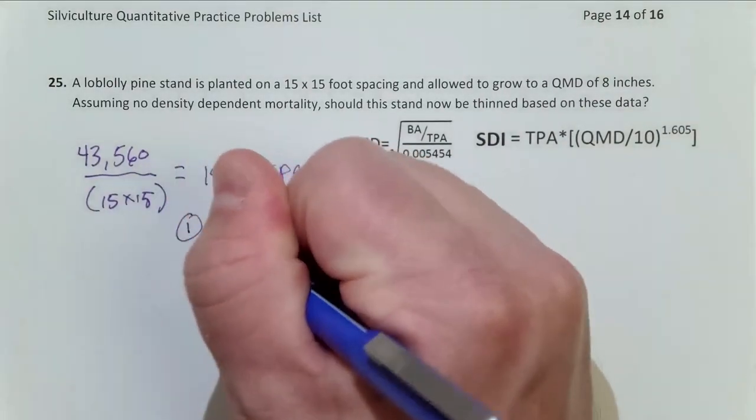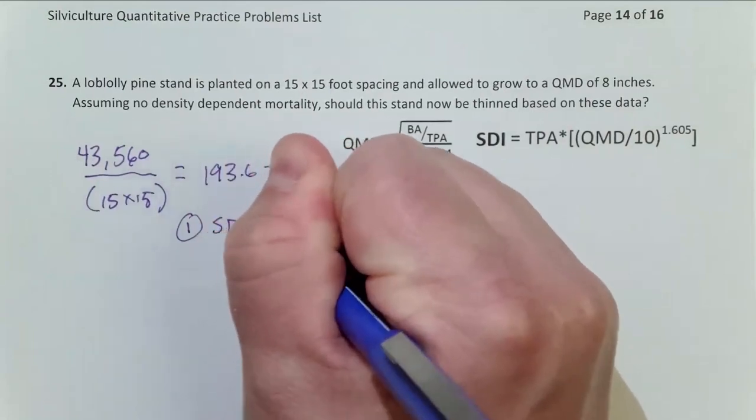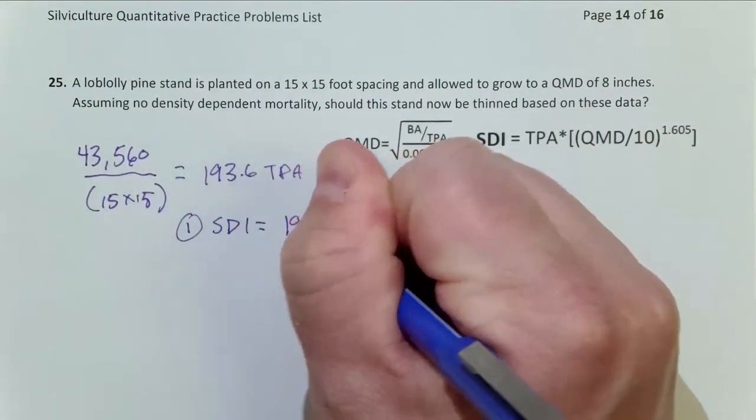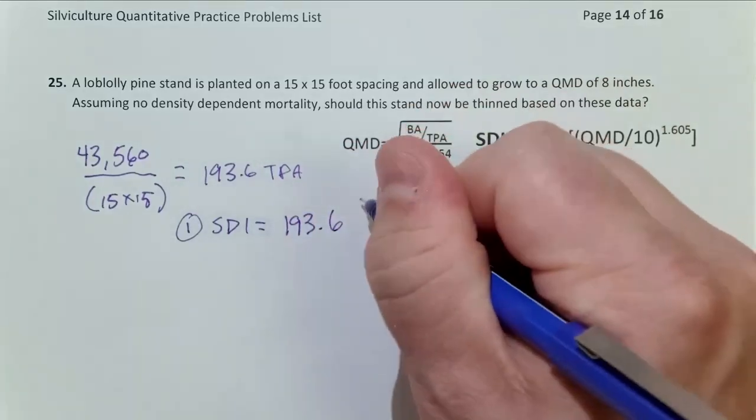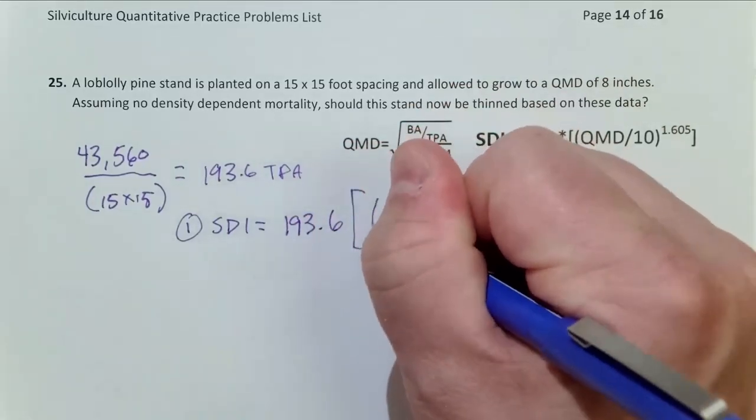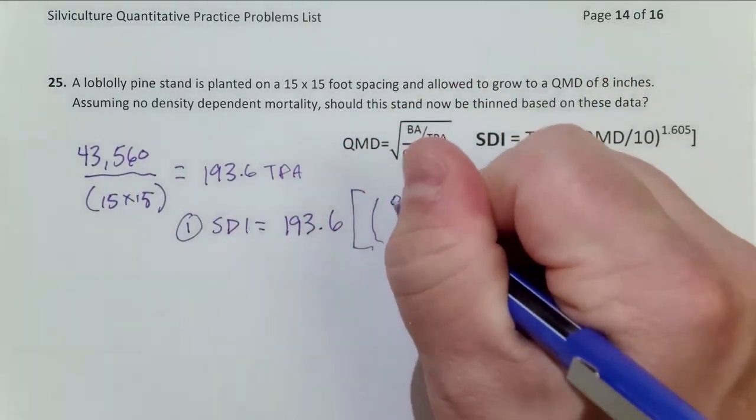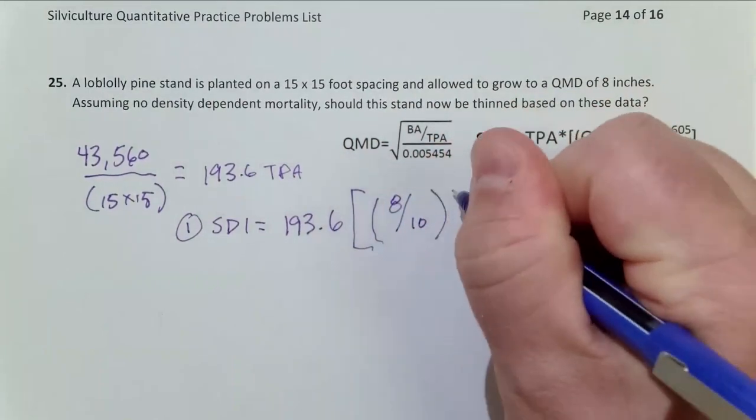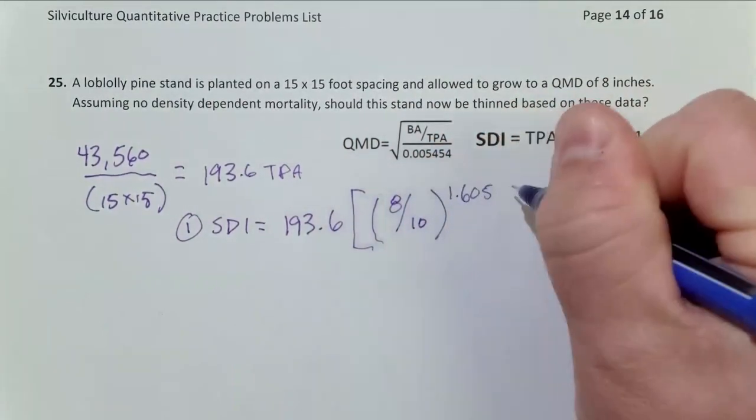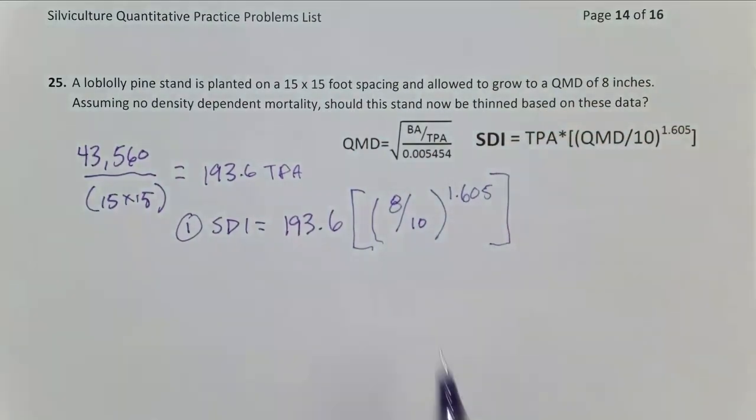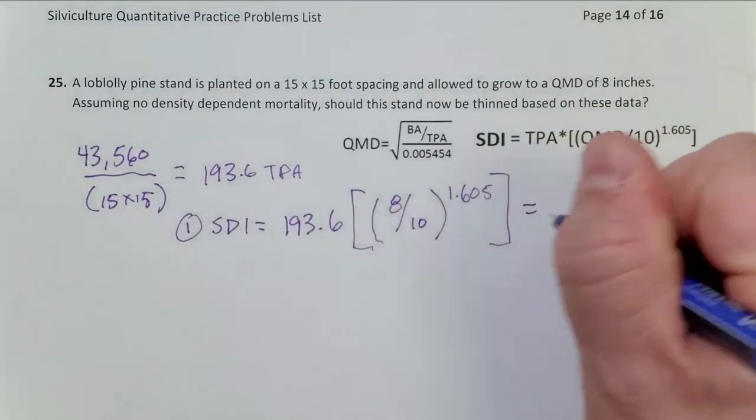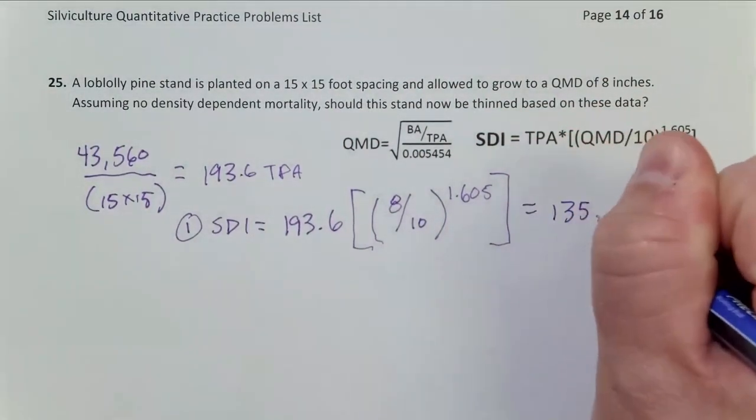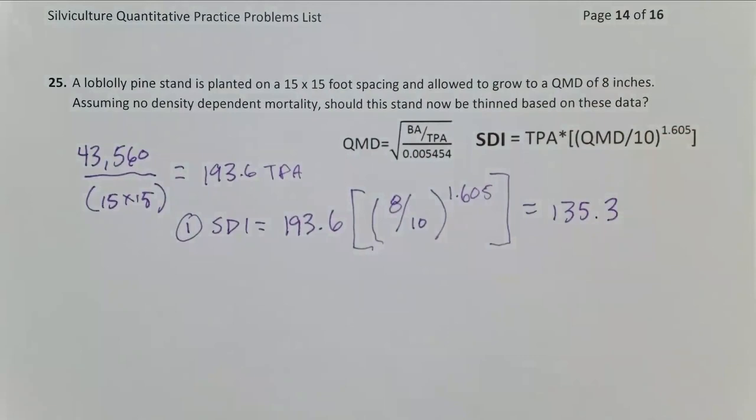Step one, calculate SDI. So that equals 193.6 trees per acre times, our QMD is 8 inches over 10, raised to 1.605. And again, order of operations, 8 divided by 10, 0.8. Raise 0.8 to 1.605. Then take that whole number and multiply it by 193.6. And that will give you 135.3, 10-inch trees per acre.